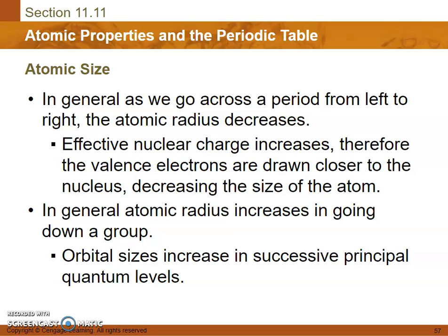In general, atomic radius increases in going down a group because they have more protons and more neutrons and electrons. Orbital sizes increase in successive principal quantum levels.